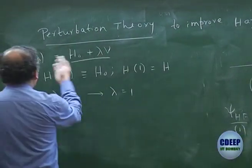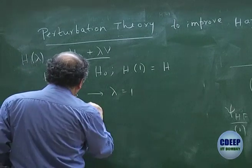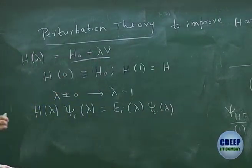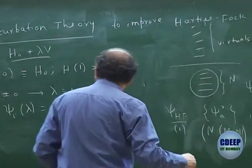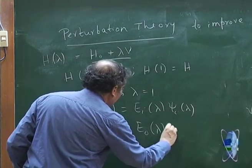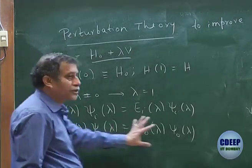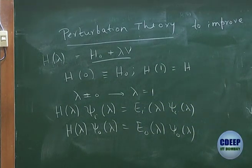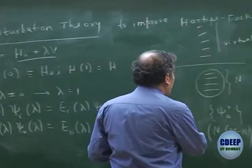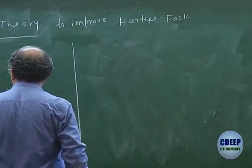If you look at the solutions of H(λ), I can write them as ψᵢ(λ) with eigenvalue Eᵢ(λ). I am particularly interested only in the ground state: H(λ)ψ₀(λ) = E₀(λ)ψ₀(λ). When λ = 0, H(λ) becomes H₀ and all solutions are known for λ = 0, but not for other values of λ. So we will exploit these to find out what we can do.